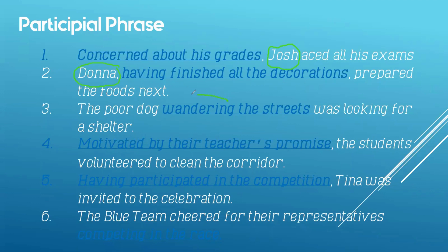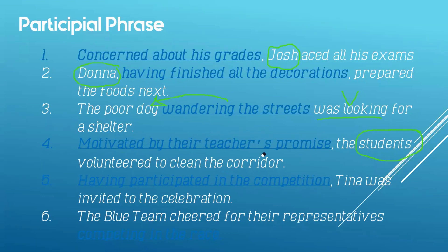Number 3: 'Wandering the streets' refers to or describes the subject 'dog.' The main verb here is 'was looking.' The poor dog — wandering the streets. Number 4: 'Motivated by the teacher's promise' — take note, it starts with the verb 'motivated' in verb form, but does not function as a verb. The word modified is 'students.' Which students? The students who are motivated by the teacher's promise. So that is your participial phrase, and 'students' is the word modified.